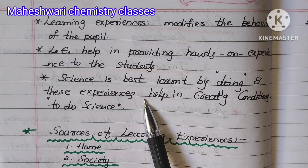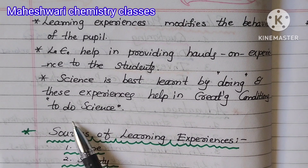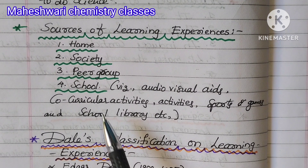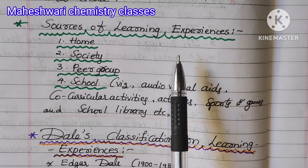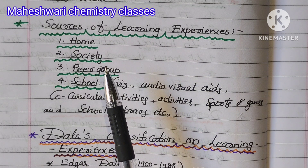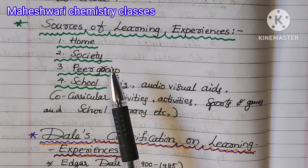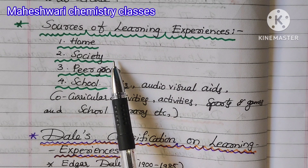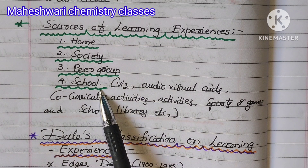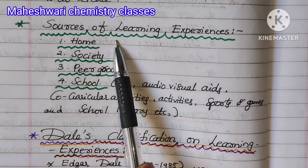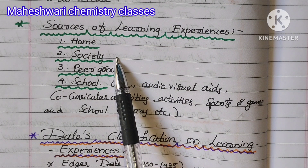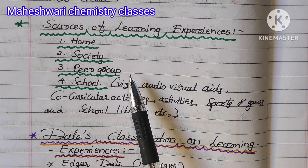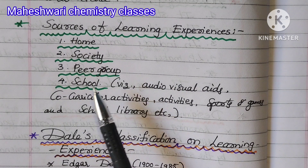These experiences help in creating conditions to do science. Next are the sources of learning experiences. The first source is Home. The second is Society. The third is Peer Group. The fourth is School. Home relates to nature. Peer group means the same age group.